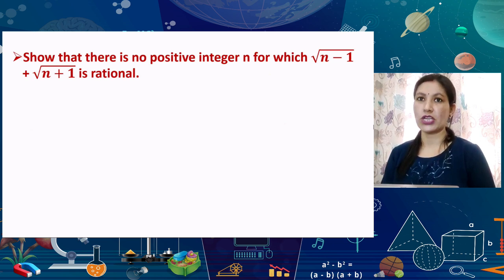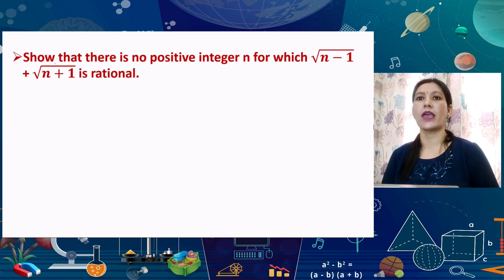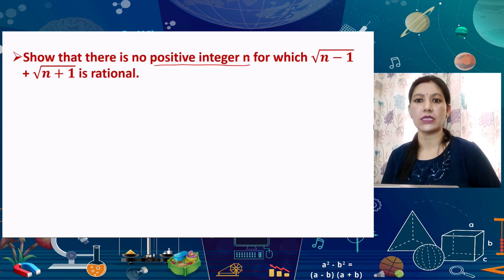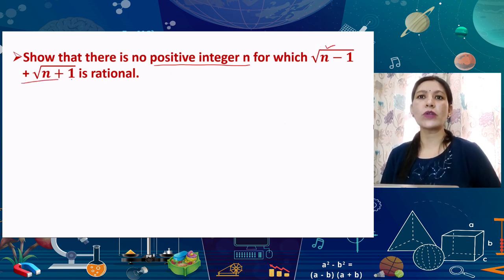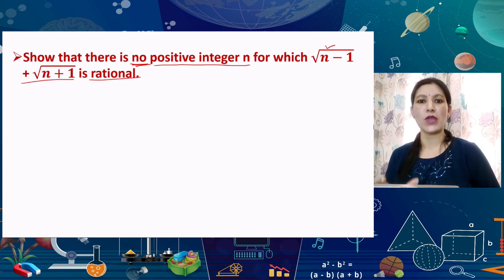The next question is: prove that for no positive integer n is the expression √(n−1) + √(n+1) rational. We have to prove that for every value of n as a positive integer, this expression will be irrational. We again start by assuming the opposite — that this expression is rational and can be written in the form P/Q.